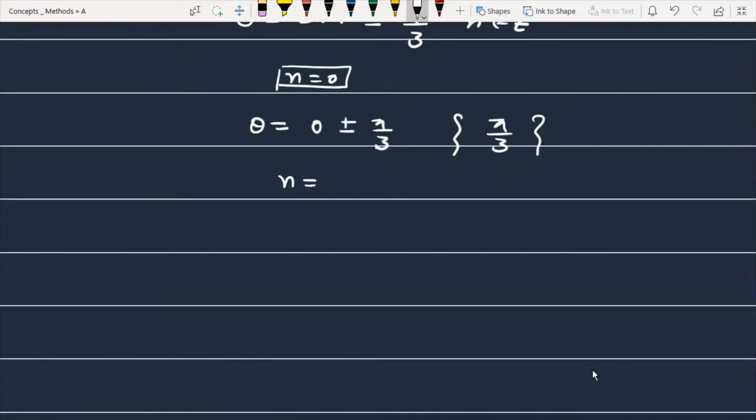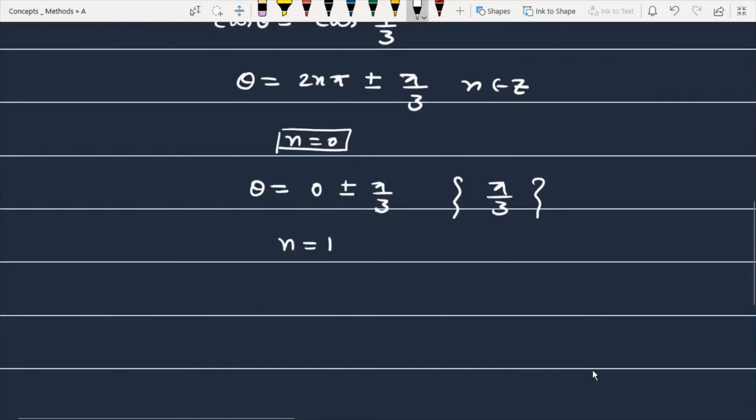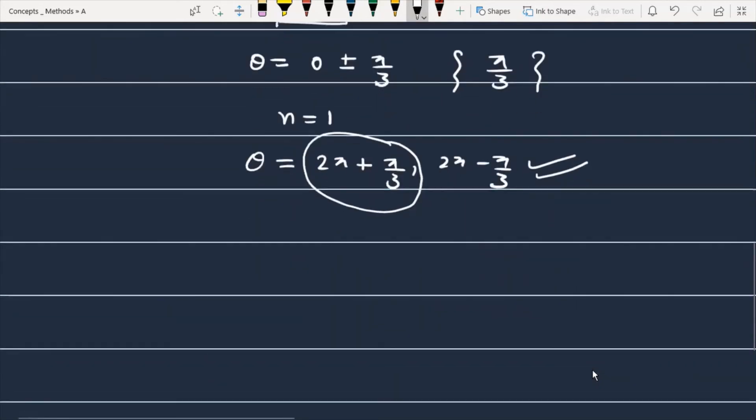And now what do we do? We are just putting n equals 1. And when I substitute n equals 1 here, then θ will generate. θ is 2π plus π/3, or 2π minus π/3. Now, the number which is 2π plus π/3, it is greater than 2π. As you will remember, the answer is less than or equal to 2π. The answer is this term, and if you simplify it, then it becomes 5π/3.